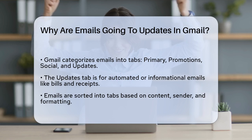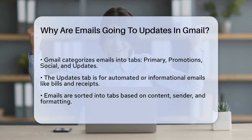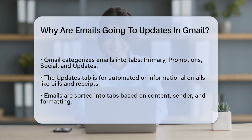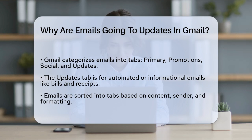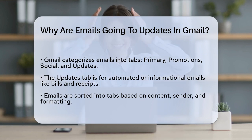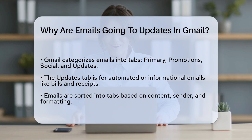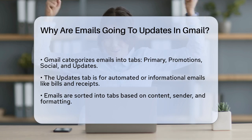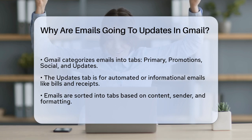Gmail uses a system to categorize your emails into different tabs to help you manage your inbox better. These tabs include Primary, Promotions, Social, and Updates. The Updates tab is designed to catch emails that are more automated or informational, like bills, receipts, or updates from services you use.